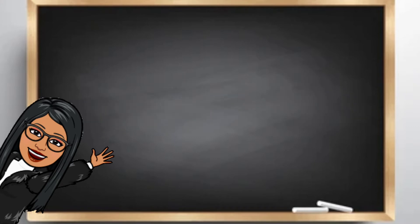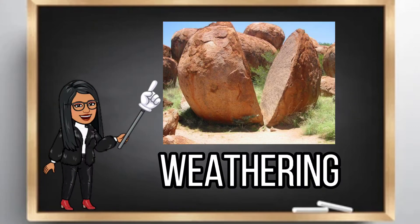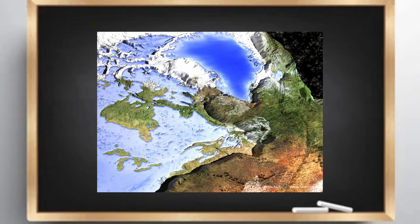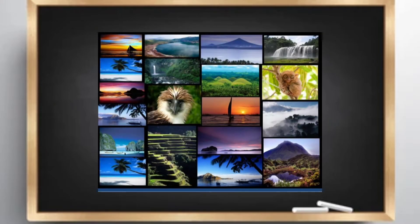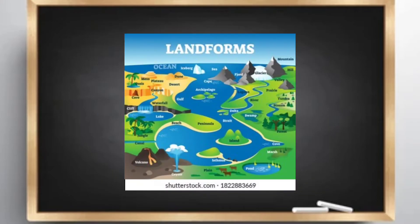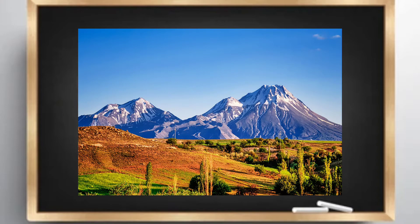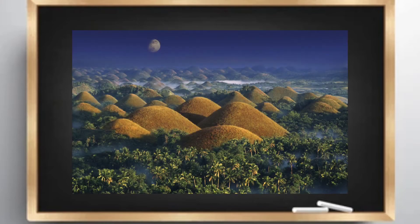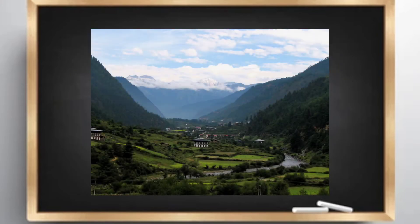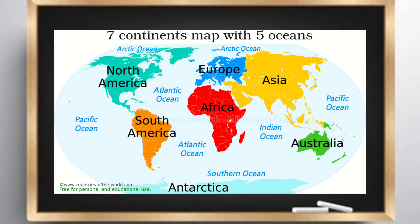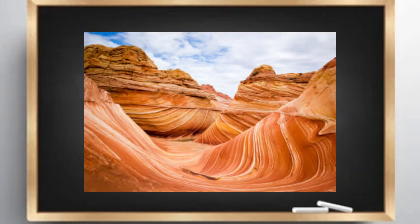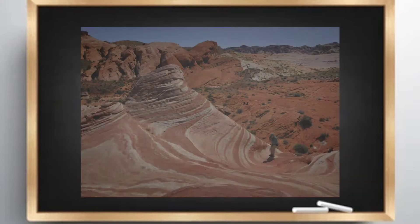The Earth's surface is covered by bodies of water and landforms like mountains, plains, hills, and valleys. Every continent on Earth continues to change as time goes by.